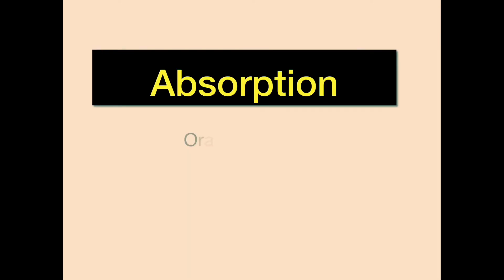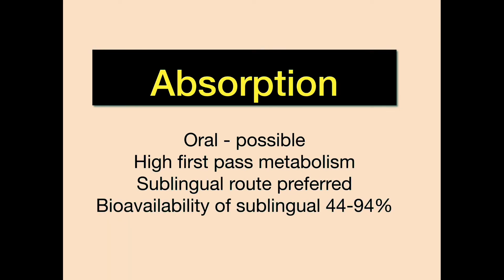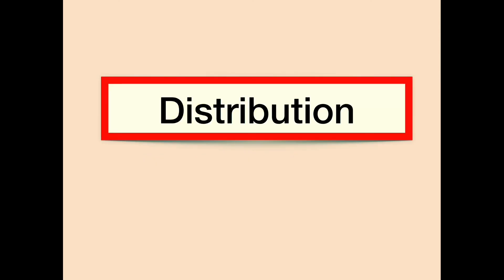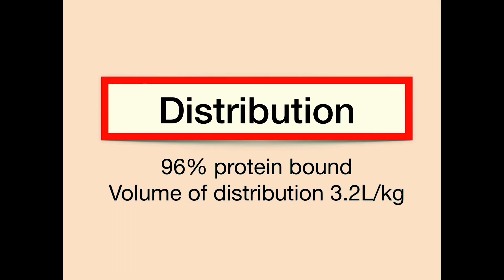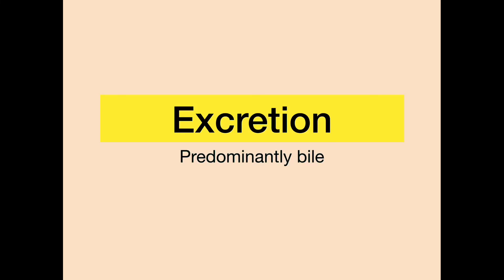With regard to its pharmacokinetics, oral absorption is possible; however, there is high first-pass metabolism and therefore the sublingual route is preferred. The bioavailability of this route is 44 to 94%. It reaches the central nervous system unchanged. It is 96% protein bound and has a volume of distribution of 3.2 litres per kilogram. It is metabolized in the liver via dealkylation, then conjugation to glucuronide. Buprenorphine is excreted in the bile, and its clearance is around 1 litre per minute.